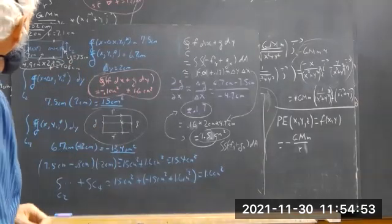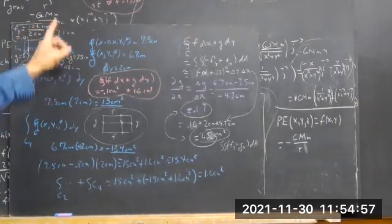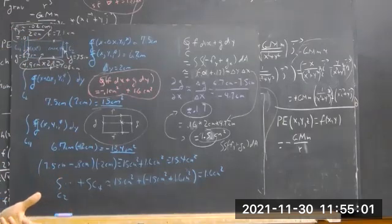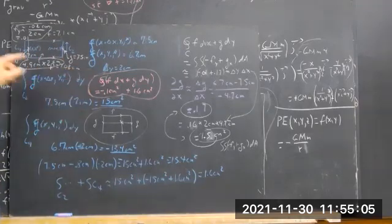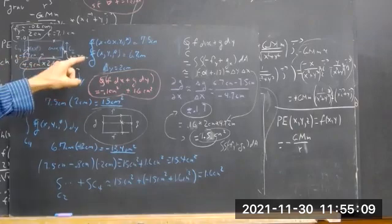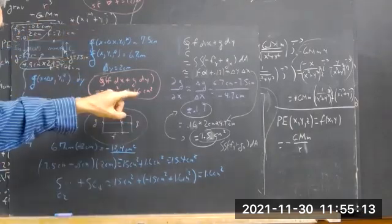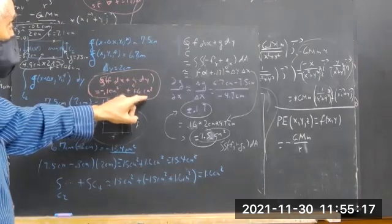Same approximations. The distance is 2 centimeters. The displacement here is plus 2 centimeters, the displacement here is negative 2 centimeters. So you have 2 centimeters times this minus 2 centimeters times this, which is 2 centimeters times 0.8 centimeters, which is 1.6 centimeters squared. There's your integral of Gdy.